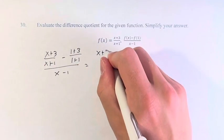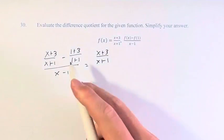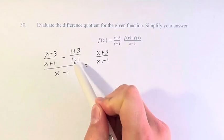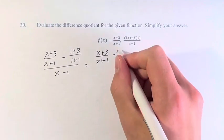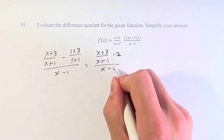This stays the same. This is minus 4 over 2, which is minus 2, and this is over x minus 1.